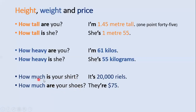We use verb to be to talk about price. 'How much is your shirt?' 'How much are your shoes?' — 'They are $25.'